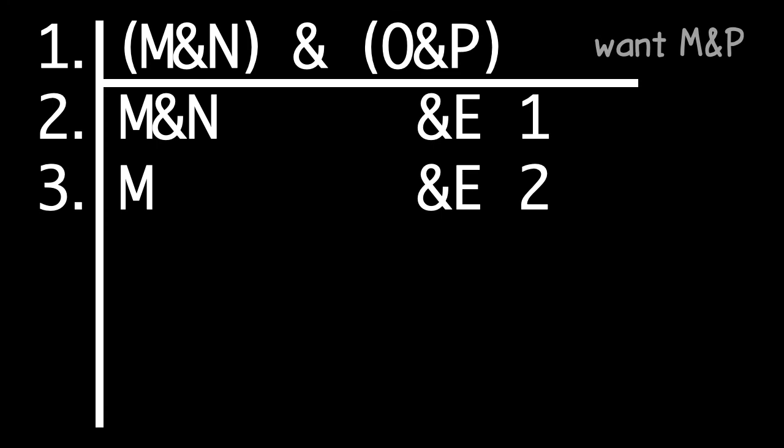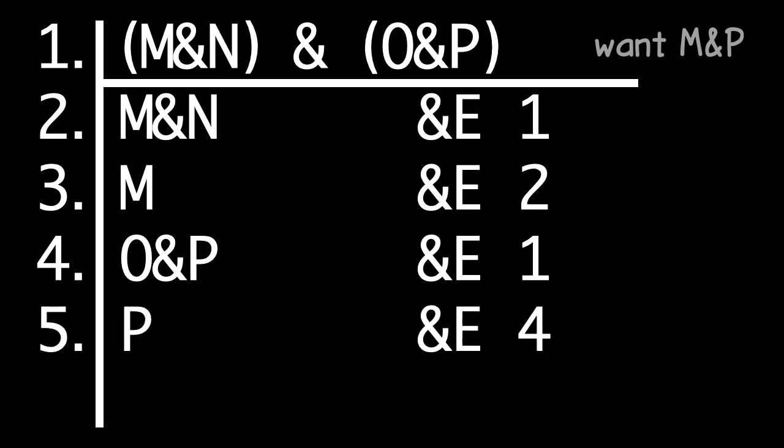There's nothing much we can do with line three on its own. Notice though that we can still get something out of line one. The AND elimination rule lets us write down the right-hand side as well. We can get O and P by AND elimination on one. Again, that gives us a new conjunction, and we can do something with that. We can get P by AND elimination on four.